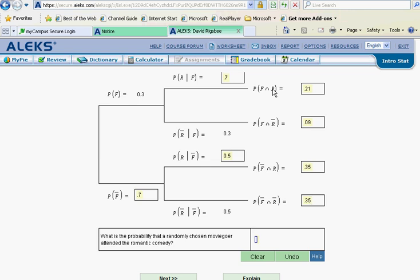But what we want is either/or - male or female that attended the romantic comedy. So we want to use the addition rule, and we want to add together this one and this one, or 0.21 and 0.35. So we grab for our calculator: 0.21 plus 0.35, that turns out to be 0.56. And so we see overall then that 56% of the moviegoers go to the romantic comedy.